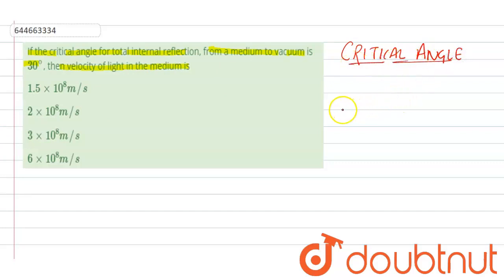So suppose this is a medium, denser medium having refractive index mu and this is a rare medium having refractive index 1, this is normal line and this is angle incident light ray.